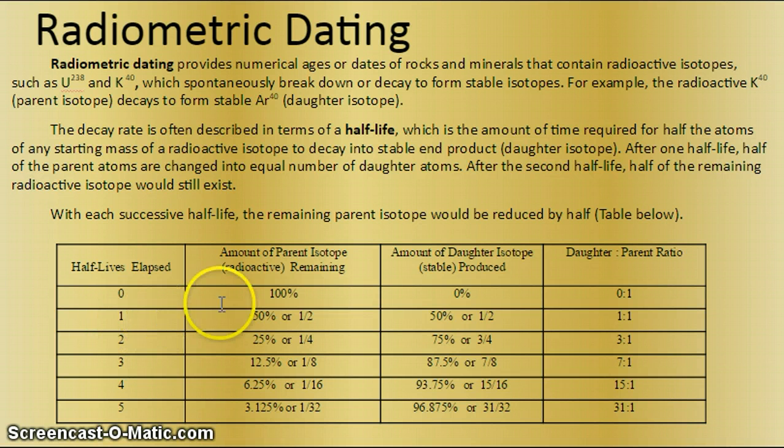However, after one half-life, you have 50%, or half of the total parent radioactive isotope that has decayed. So I have 50% radioactive still, yet I have 50% that is stable. So half of the sample is stable, half of it is radioactive, and this is a one-to-one ratio.